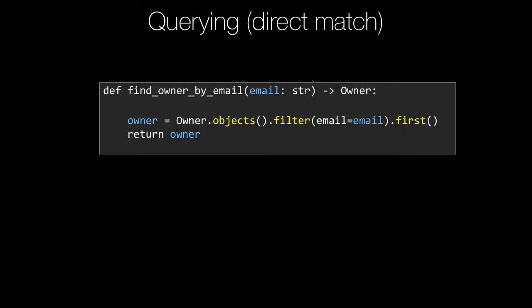Querying the database is pretty straightforward. The way it works is we start with the collection — the type that represents the collection we want to work with — and then we say .filter. So here we're saying filter, and we want to do a match where the email equals the value of the email variable. You can have more than one filter statement, and those basically combine as an AND.